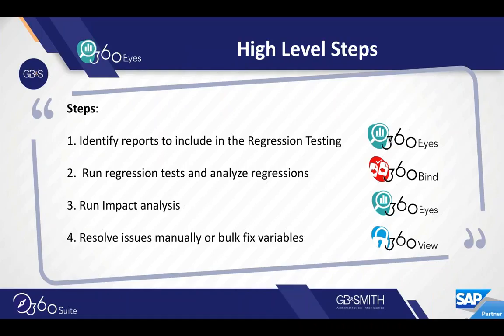We do have a tool called 360Is that is a BI-on-BI tool that will allow you to identify reports that have been used, are being used, or are the most heavily used, so you can focus your testing on those reports. We'll show you that tool, and then 360Bind is the automated regression testing tool.